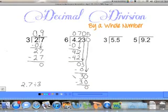And so we are officially done because we have 0 here and no more numbers to bring down. Our last step again is to bring up our decimal point. So our answer becomes 0.705.